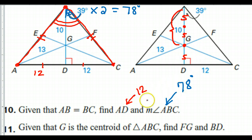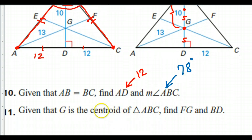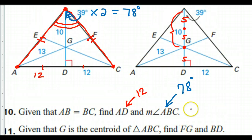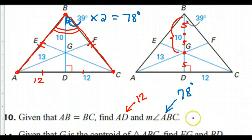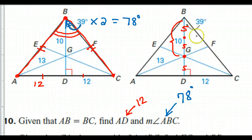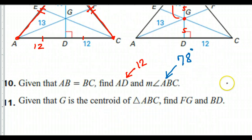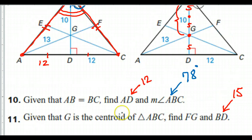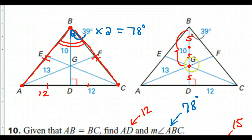One question asked is: what is FG? We'll have to come back to that. But it also asked what is BD. That one I can answer right now. BD goes all the way from the top to the bottom — five, five, and five — so BD is 15.